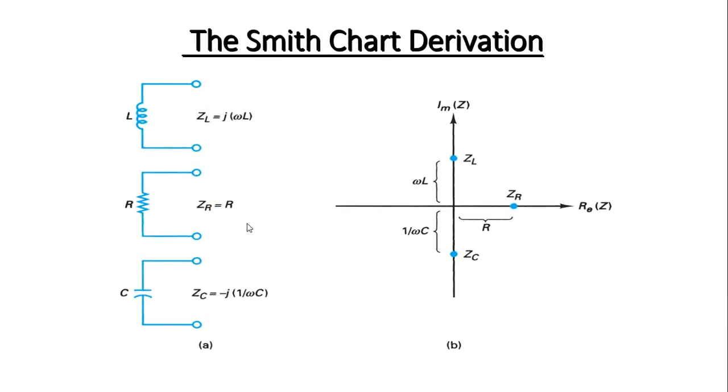The Smith Chart derivation: For inductance, ZL equals j omega L. For resistance, ZR equals R. For capacitance, ZC equals minus j divided by omega C.